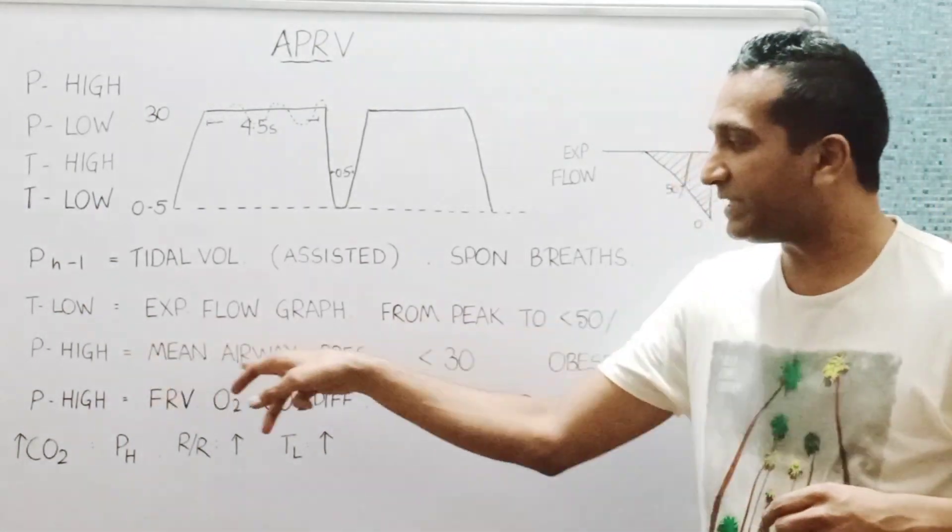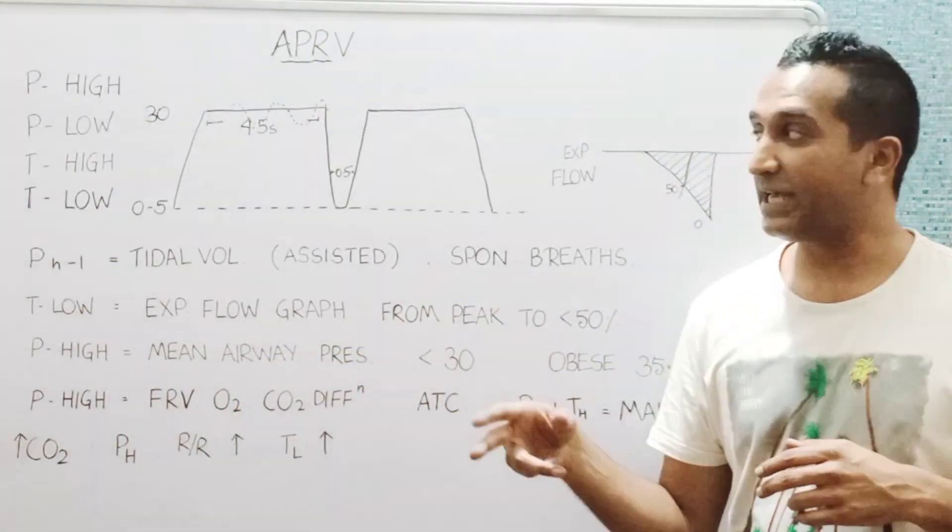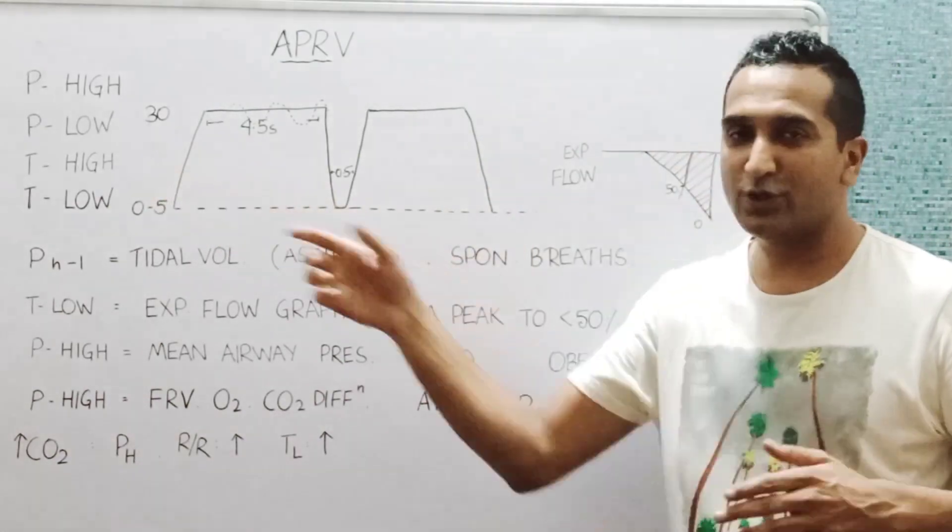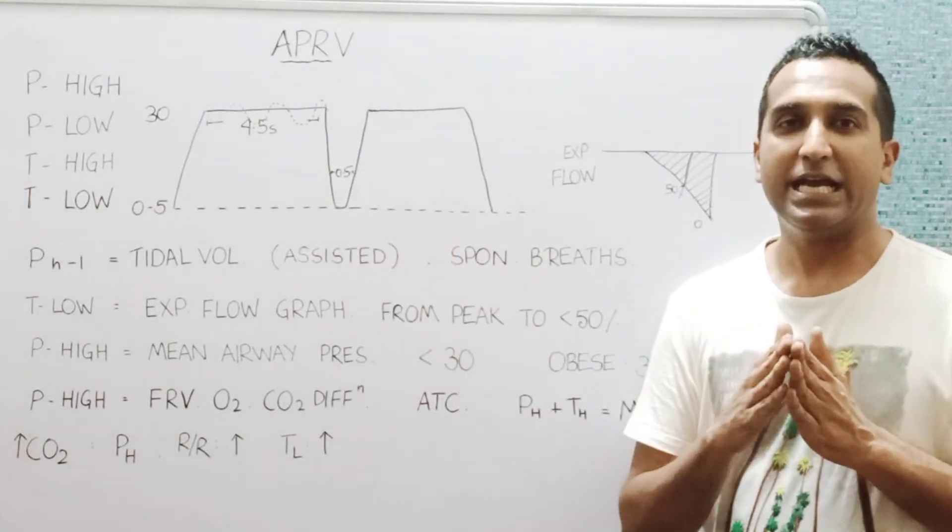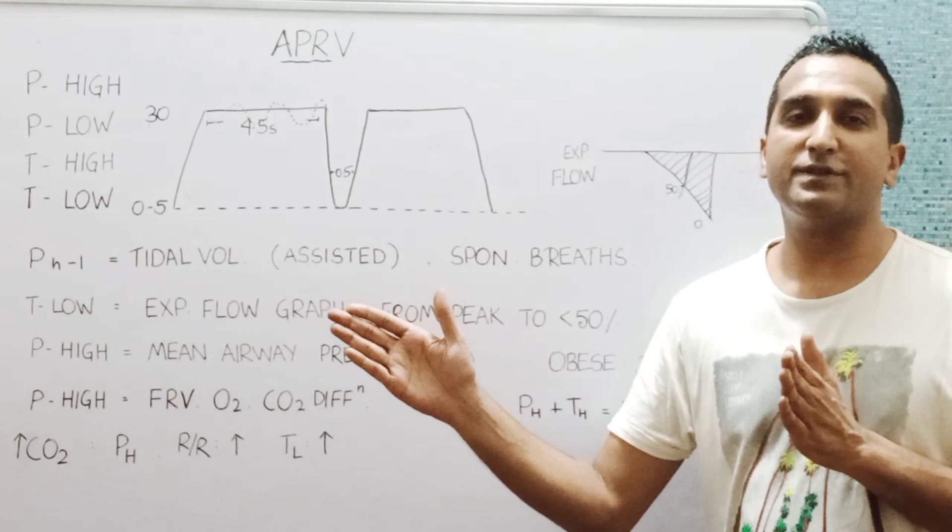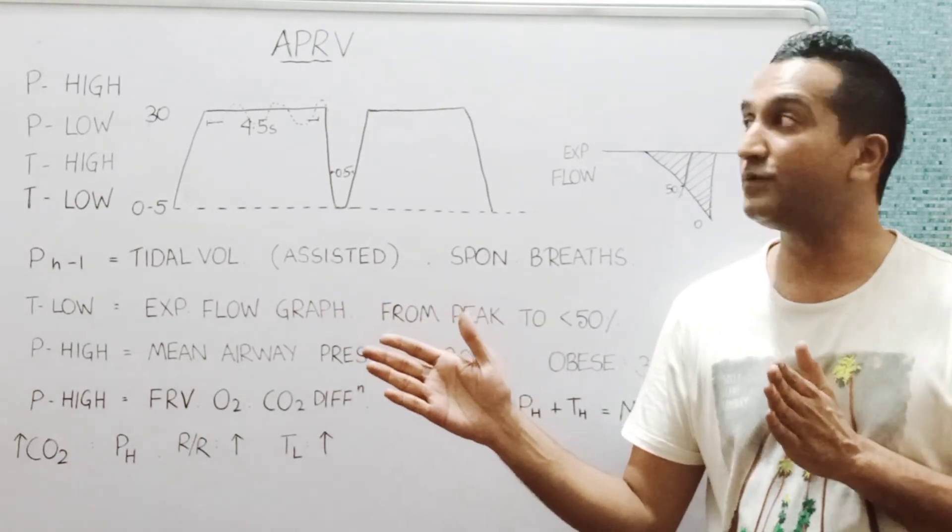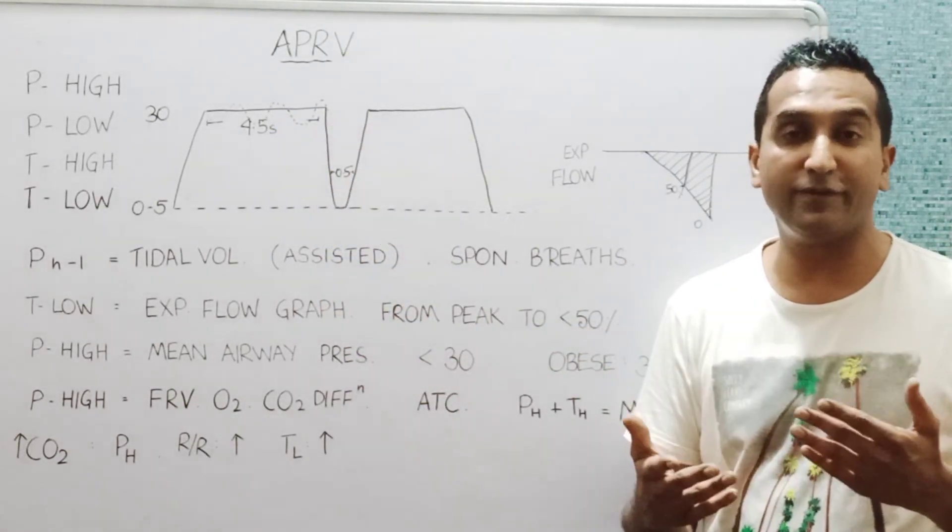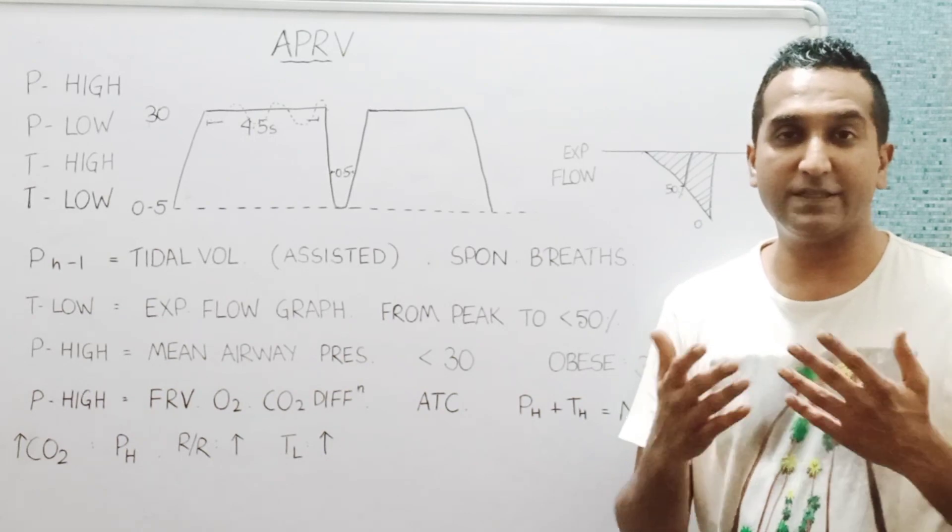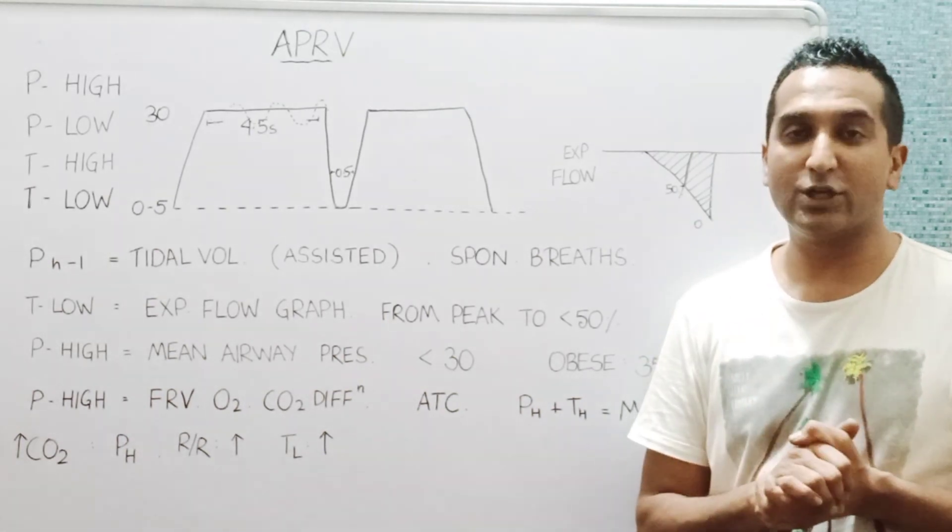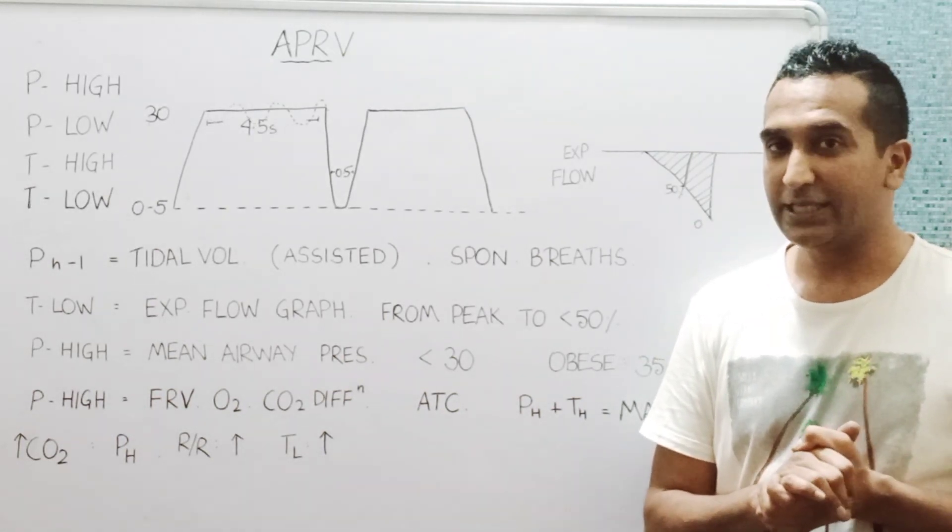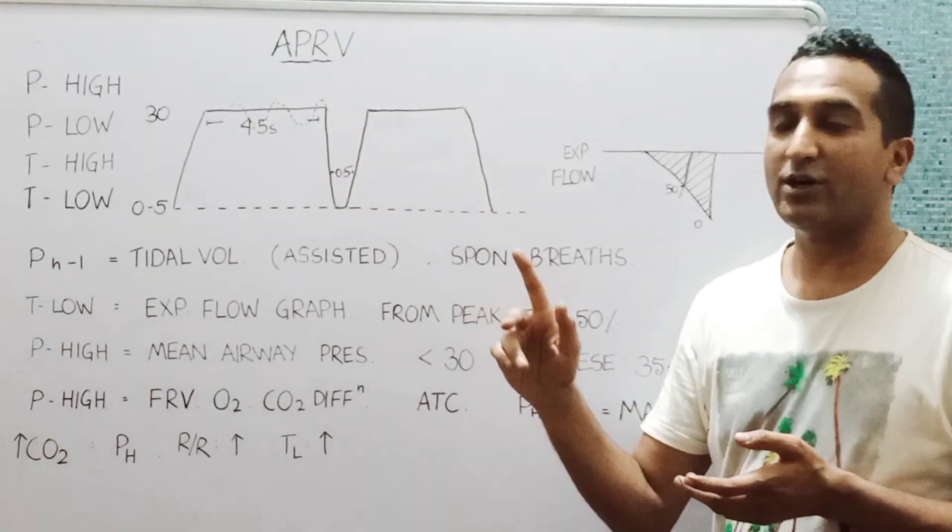The P high determines the mean airway pressures along with the T high. So if you have higher pressures going on for longer periods of time, your oxygenation will improve. So you might go from 4.5 seconds to 5.5, 6, 7, 8. It all depends on the particular patient, but this is what determines the oxygenation.